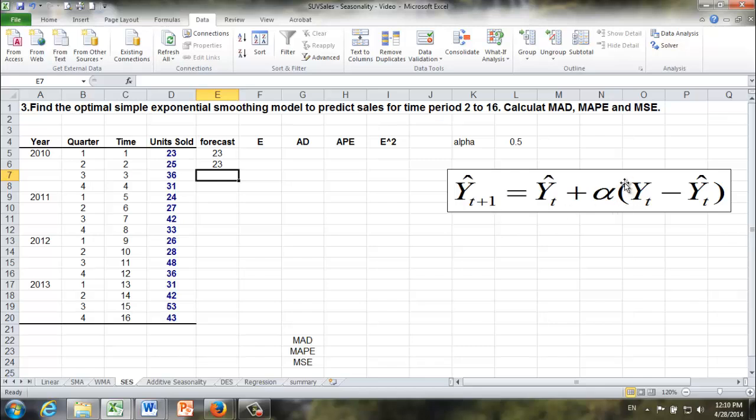What we have in this parenthesis is nothing but the forecast error from previous time period. So alpha is actually making an adjustment based on the previous forecast error.